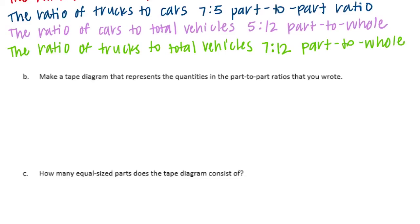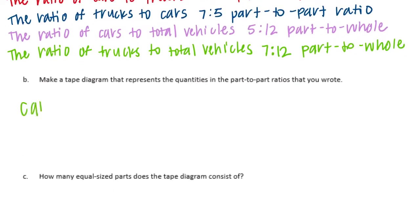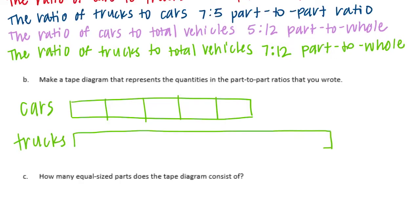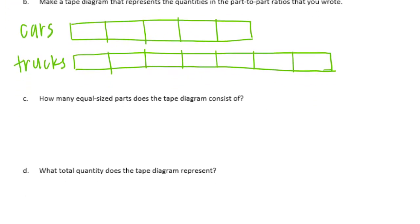Part B: make a tape diagram that represents the quantities in the part-to-part ratios, which is five to seven or seven to five. Cars were five, so we have one, two, three, four, five boxes. And trucks was seven. Part C asks how many equal-size parts does the tape diagram consist of — how many pieces does it have. There's one, two, three, four, five, six, seven, eight, nine, ten, eleven, twelve. So there are 12 equal-sized pieces.